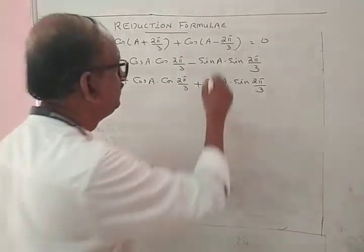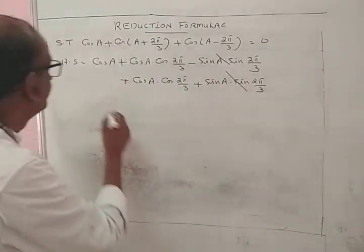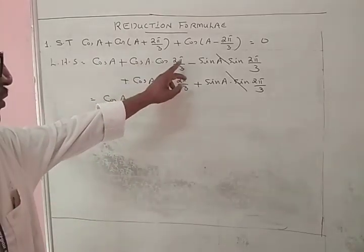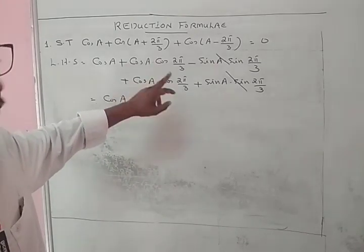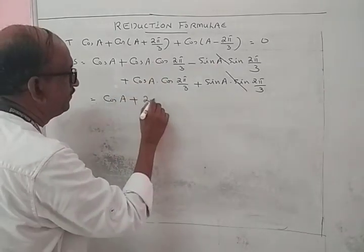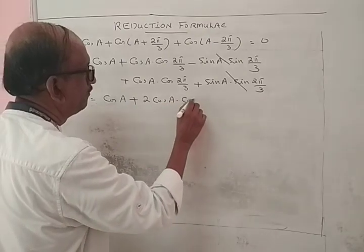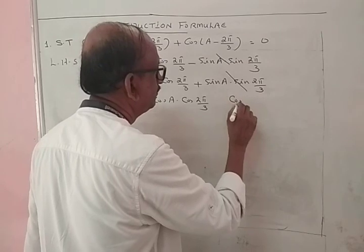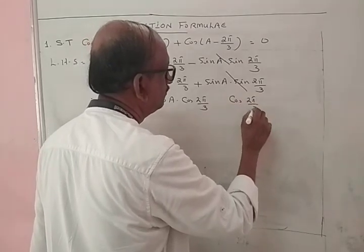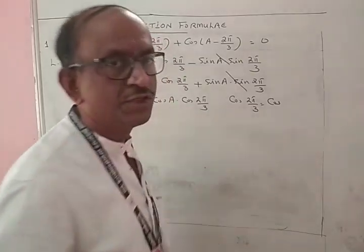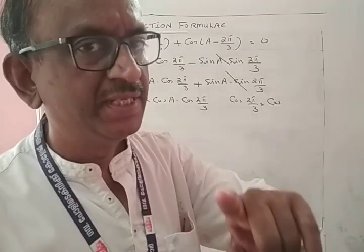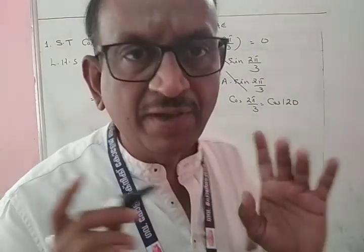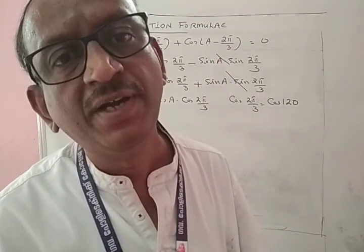The sine terms cancel each other. For cos(A + 2π/3), we need cos(2π/3). Since π/3 is 60 degrees, 2π/3 is 120 degrees. We know the value of cos 120, which is minus 1/2.